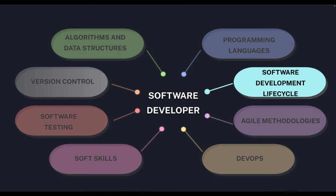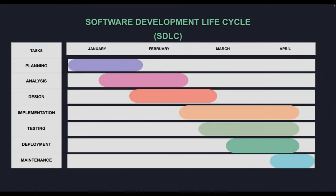The software development life cycle is not a single day — it spans months. It includes multiple steps: planning, analysis, design, implementation, testing, deployment, and maintenance. You may have additional steps or some missing ones in your specific life cycle, but more or less it revolves around these phases. As a coder you don't focus on all of these, but as a developer you should.